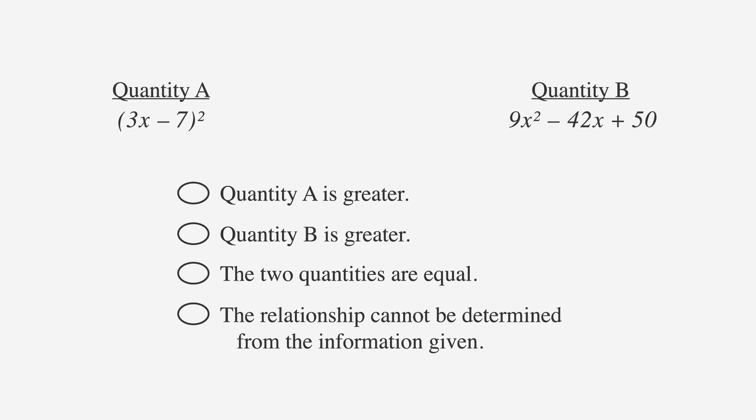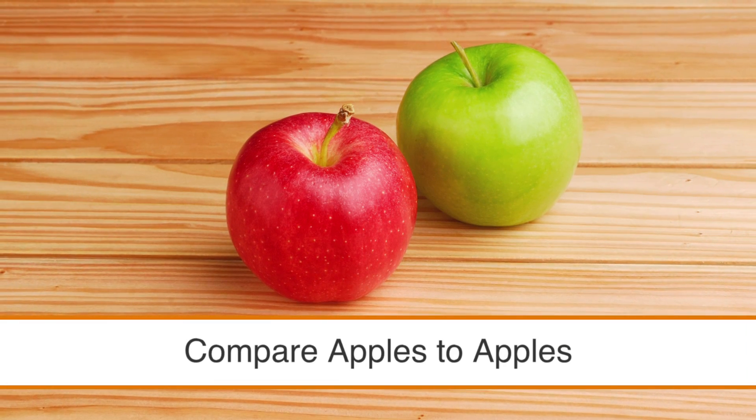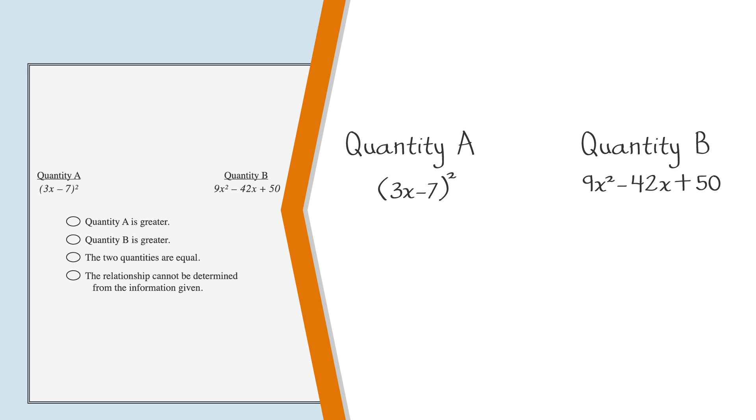This might look challenging at first glance, because the two columns look different. It's much easier to compare similar looking quantities, so the first strategy we're going to use here is called compare apples to apples. By foiling, which we'll discuss later, we can make column A look more like column B.